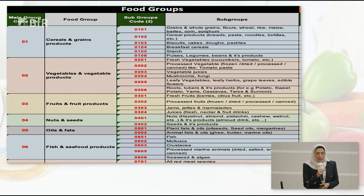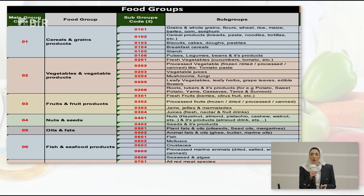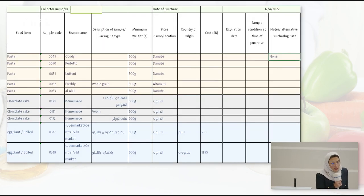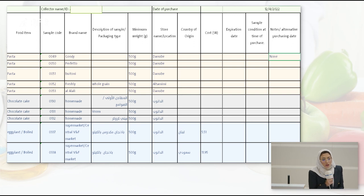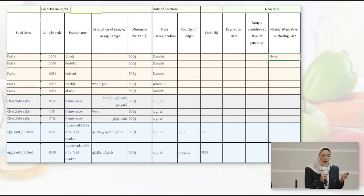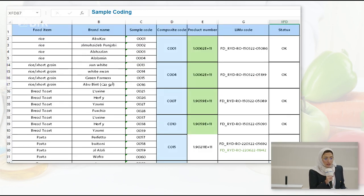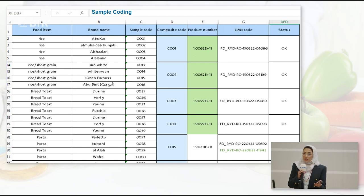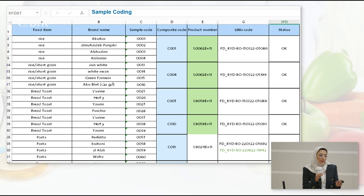We used the SFDA classification system to code the samples, which is basically based on the Codex food classification system. Here is a picture of the collection report, which includes the food items, sample codes, brand names, store locations, and country of origin for some samples. This is to track and trace the samples with the LIMS code for the laboratory, and to track whether the samples have already been analyzed.